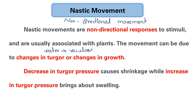A decrease in turgor pressure is associated with an increase in temperature. Loss of water causes shrinkage, while an increase in turgor pressure brings about swelling in plant tissues.